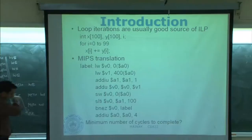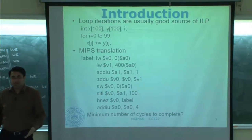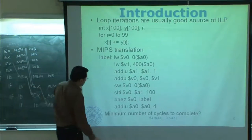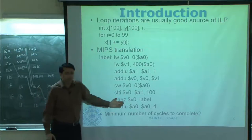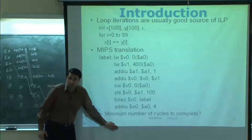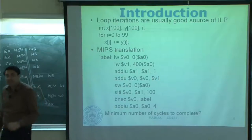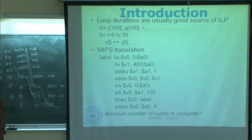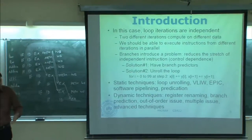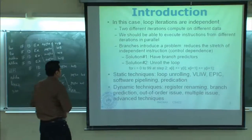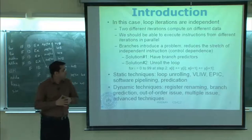Because the biggest problem is the branches. Although you can clearly see that this branch will be taken 99 or 100 times and the last one will not be taken, the question is how does the hardware figure that out at runtime? The hardware hits this particular branch and has to figure out: should I go down or should I go back? The predictor will help you, but it is not an oracle — it will not give you the correct answer all the time. So branches introduce a problem: they reduce a stretch of independent instructions and introduce control dependence.